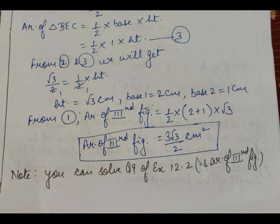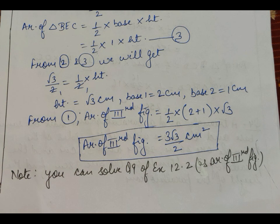We can also find the area of triangle BEC by the formula half × base × height. Here the base is given but height is not, so we write it as: half × 1 × height (equation 3). From equations 2 and 3: √3/2 = half × height, giving height = √3 cm. With base1 = 2 cm and base2 = 1 cm, we put all values into the trapezium formula: half × (2 + 1) × √3, giving area of the third figure = 3√3/2 cm².